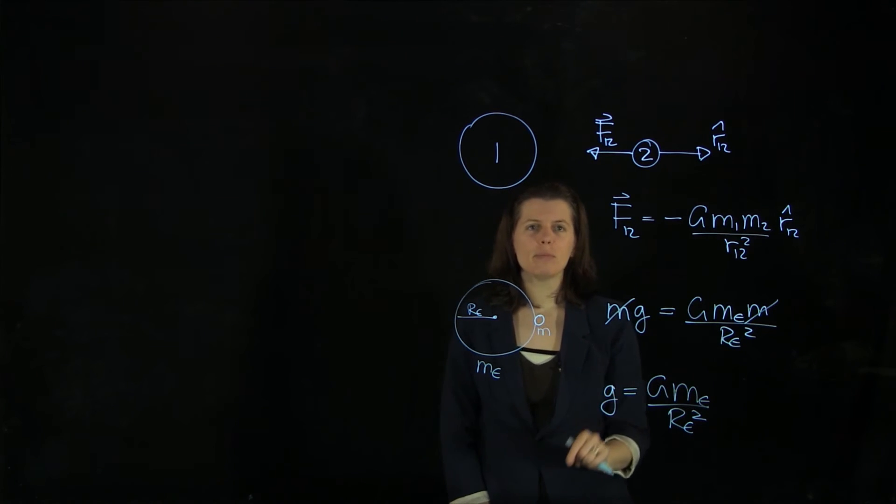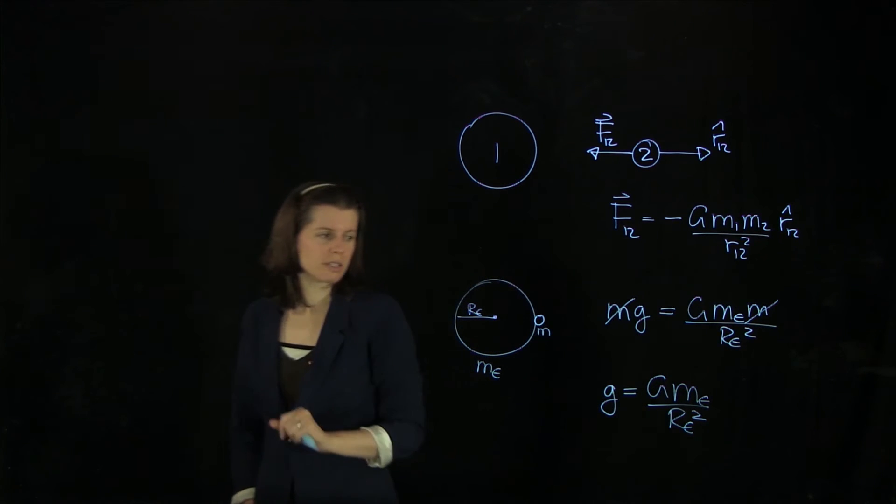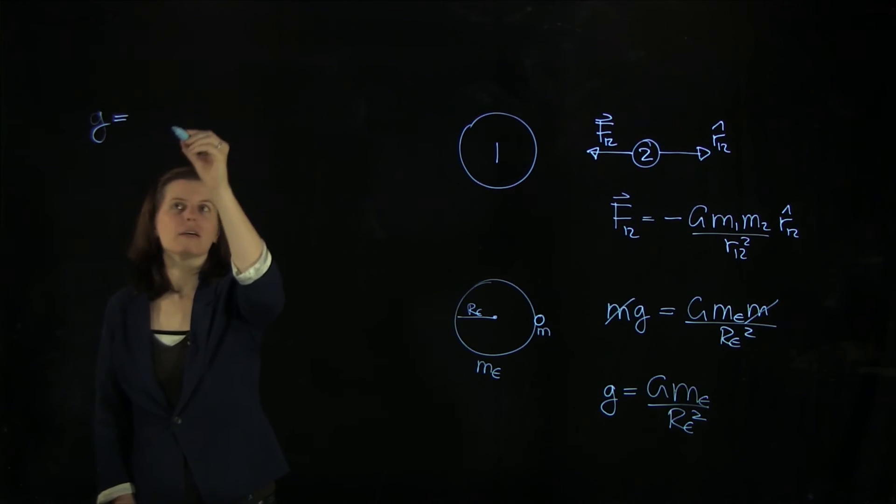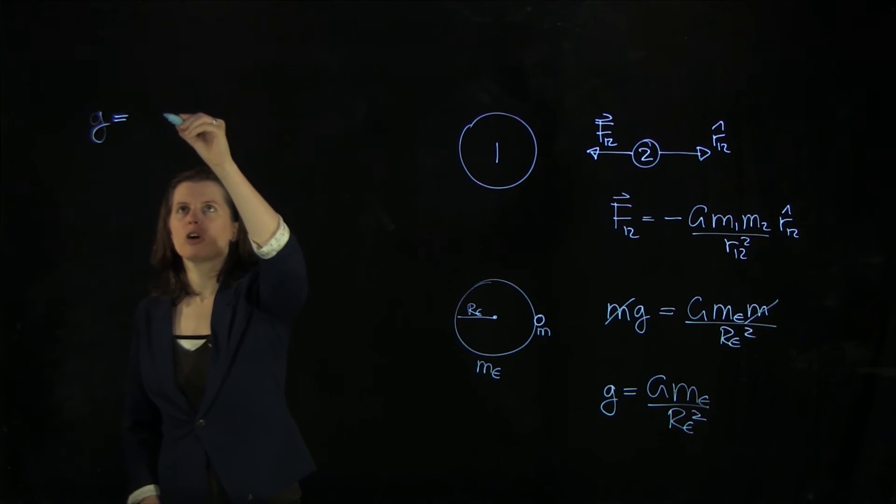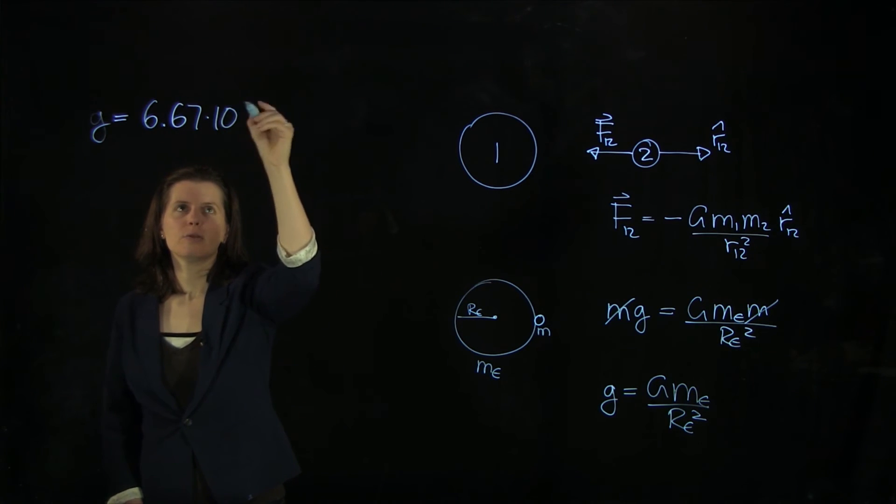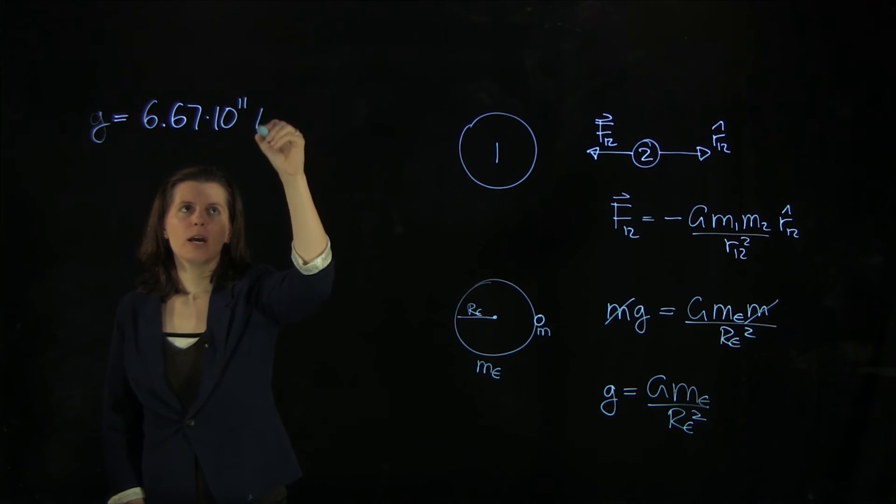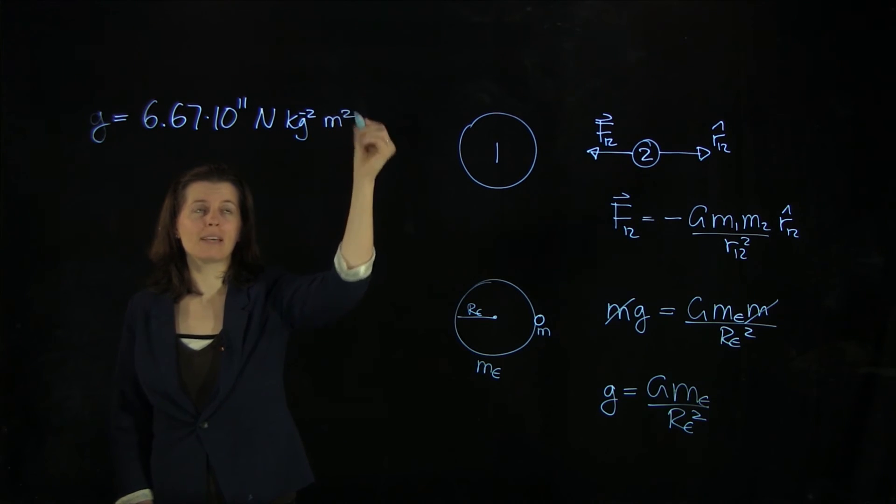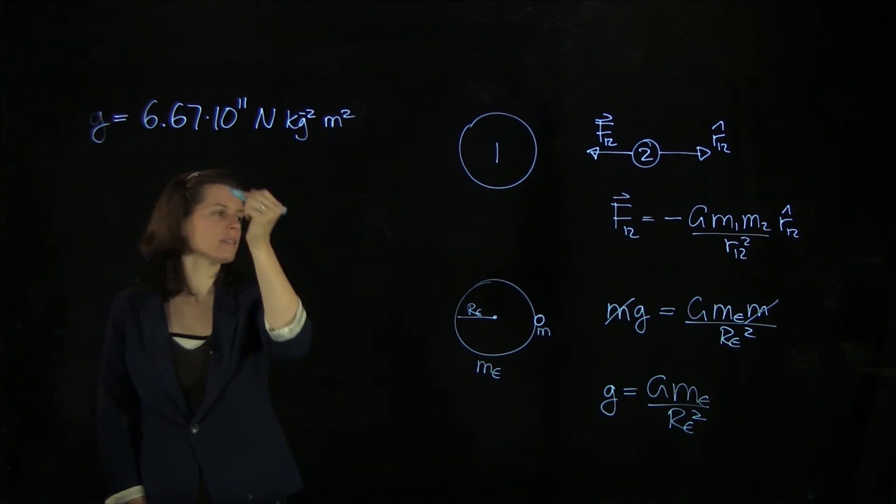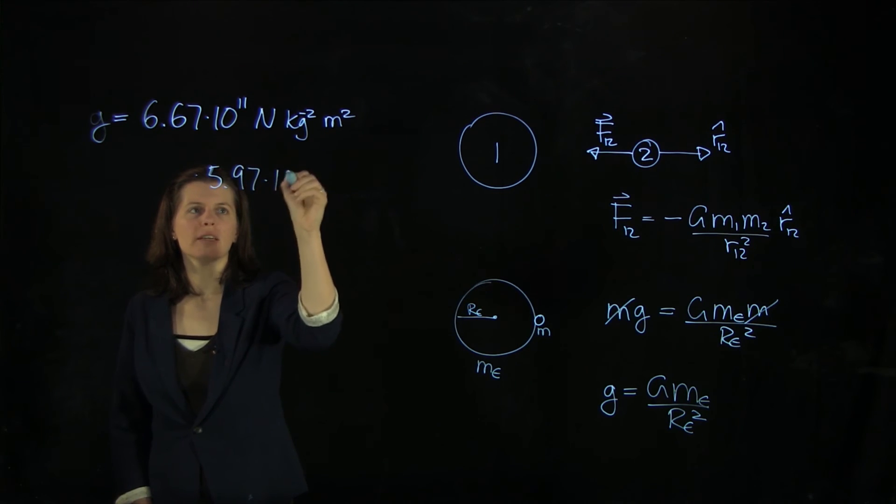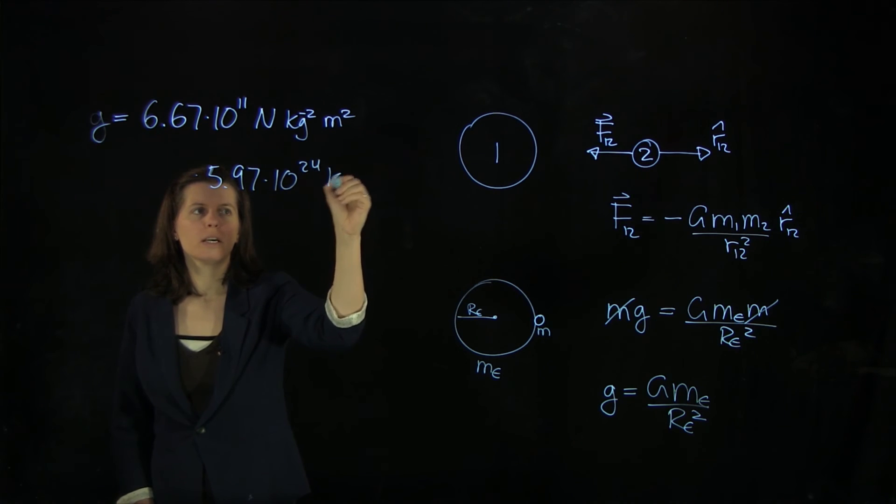So now let's put some numbers into this equation. We have capital G, the gravitational constant: 6.67 times 10 to the -11 Newton kilogram to the -2 meter squared, times the Earth mass, 5.97 times 10 to the 24 kilograms.